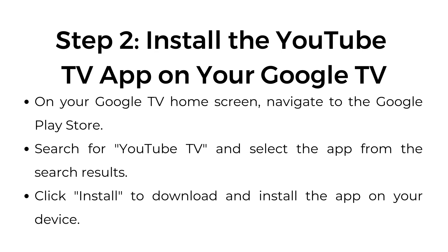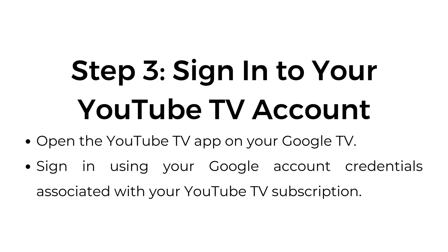Step number two: install the YouTube TV app on your Google TV. On your Google TV home screen, navigate to the Google Play Store, search for YouTube TV, and select the app from the search results. Click install to download and install the app on your device.